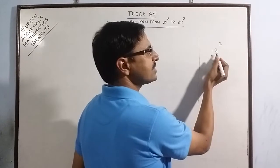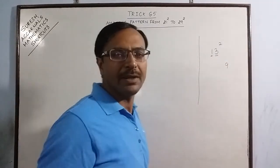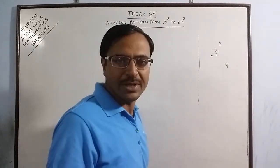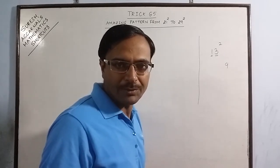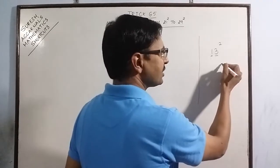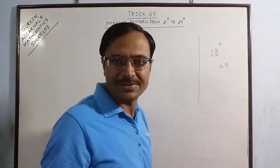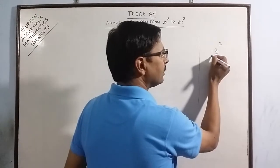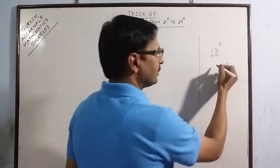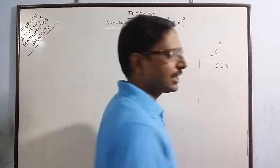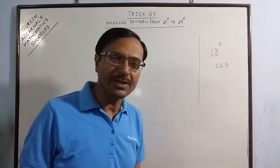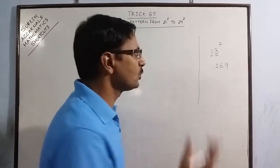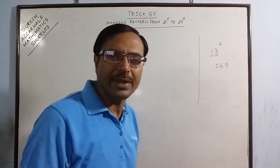Now the two digits 1 and 3 just multiply. 1 into 3 is 3. Double the product. Double of 3 is 6. Single digit number. Retain it as it is. Finally 1. 1 square is 1. So 169. As easy as that. You can find the square of any two digit number using this very simple method.